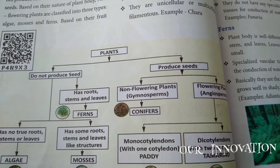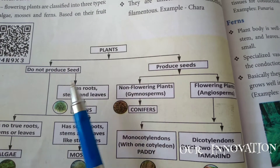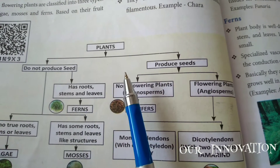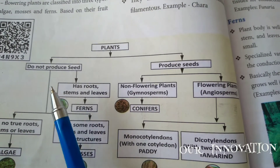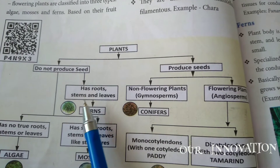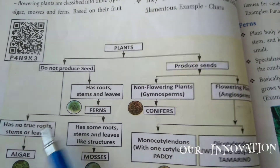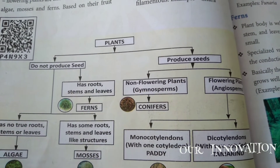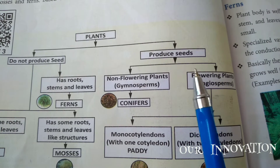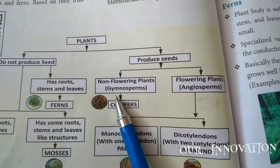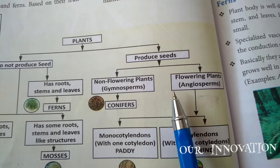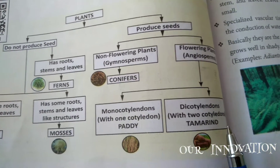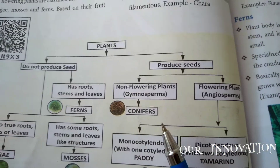Now the plant classification is given here. Plants are classified into those that do not produce seeds and those that produce seeds. Seed-producing plants have roots, stems, leaves, and seeds. Ferns are called gymnosperms and flowering plants are called angiosperms. Angiosperms are again classified as monocotyledons and dicotyledons. This is the classification of plants.